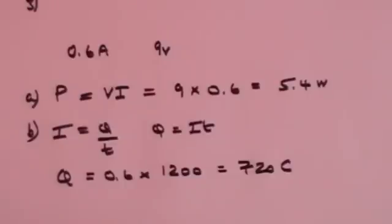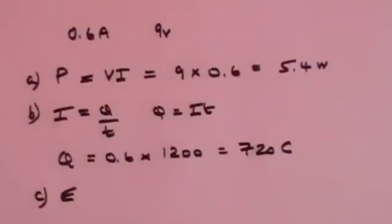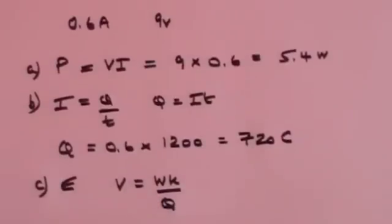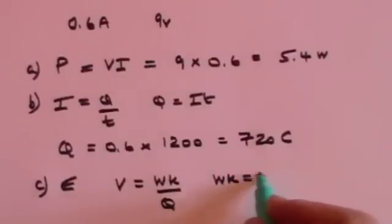And the final question is what is the energy that is consumed when the torch is on for 20 minutes. We remember that the definition of a volt is that that is the work done or energy per unit charge which means you can rearrange this to say that work which equals energy is equal to the voltage times the charge.